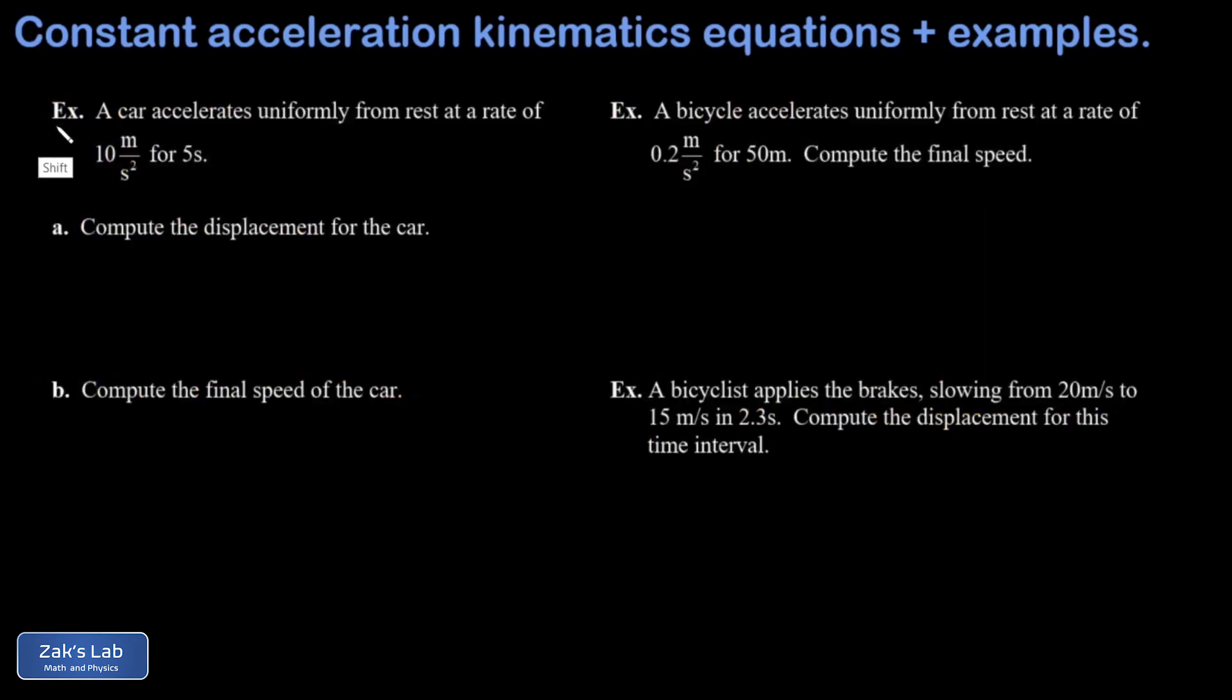Finally, we'll apply these formulas to several examples. And I think I set it up here so we get to use one of each formula. In the first one, we have a car accelerating uniformly from rest. When you see that, you think, oh, the initial velocity is zero at a rate of 10 meters per second squared for five seconds. So we have a constant acceleration. That's good. And we want to get the displacement for the car. So we're going to use the position formula.